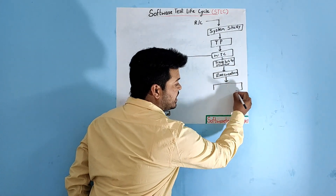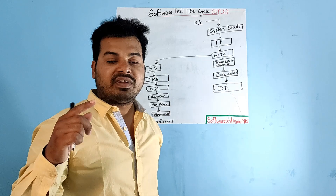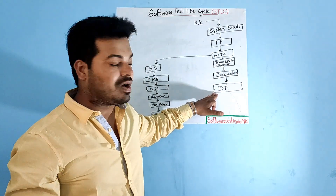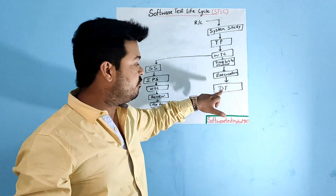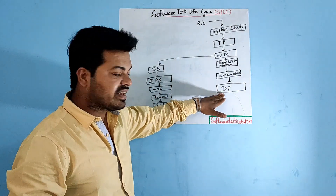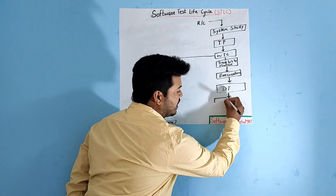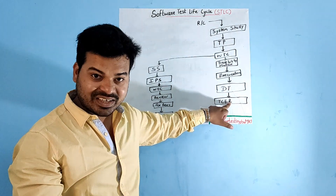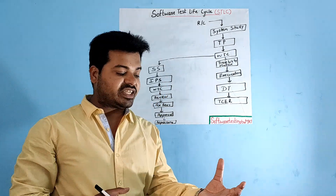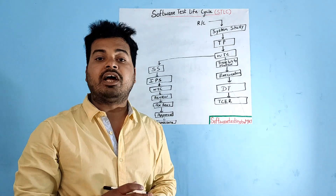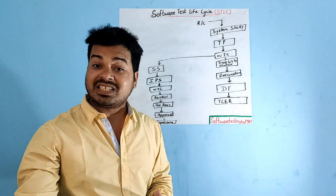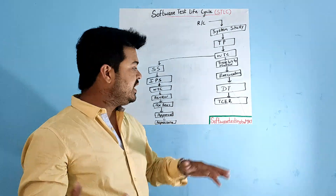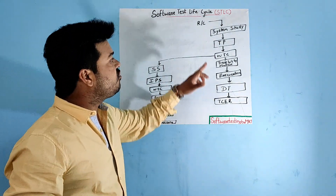After test case execution, the next stage is defect tracking. If a feature or functionality is not working according to the customer's requirement, the QA or tester raises a defect — that is defect tracking. After defect tracking, the next stage is the test case execution report, prepared by the test lead. It documents which test engineers worked on which modules, how many bugs were found, how many test cases passed or failed, and the pass percentage.